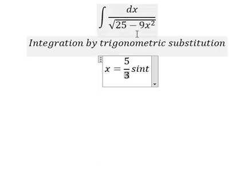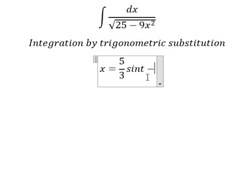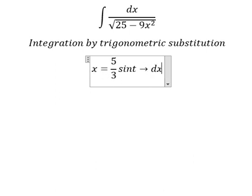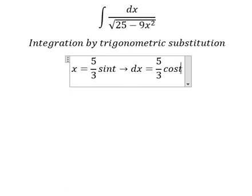We can do factorization: 1 minus sin² t we change for cos² t, and later we simplify the square root and dx. Next we need to do first derivative for both sides and we have 5/3 cos t dt.